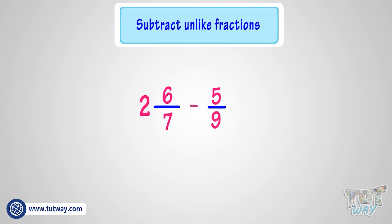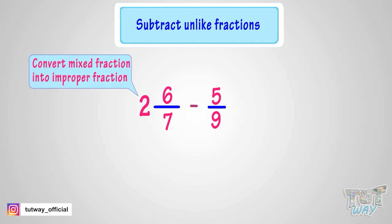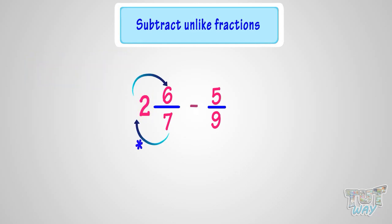We have to subtract 5 by 9 from a mixed fraction. So first we convert the mixed fraction to an improper fraction. For that, we will multiply 7 by 2 and then add 6 to it.